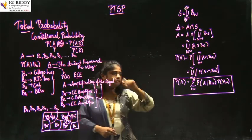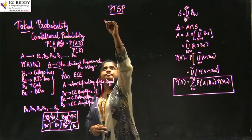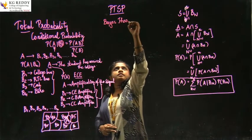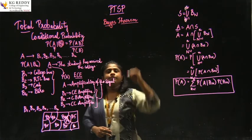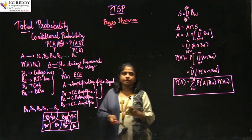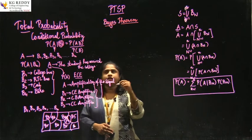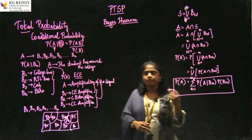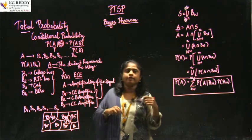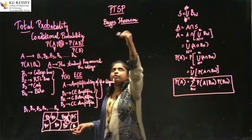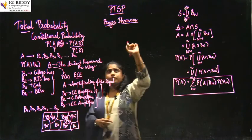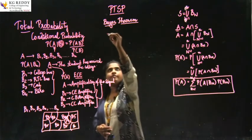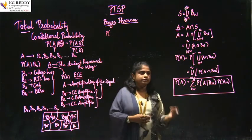Now from the total probability, we will derive the equation for Bayes Theorem. Why do we need Bayes theorem? In conditional probability we have P(A|B), but sometimes P(A|B) is given and we want to find P(B|A). That is when we use Bayes theorem. We will write the conditional probability equations to derive it.